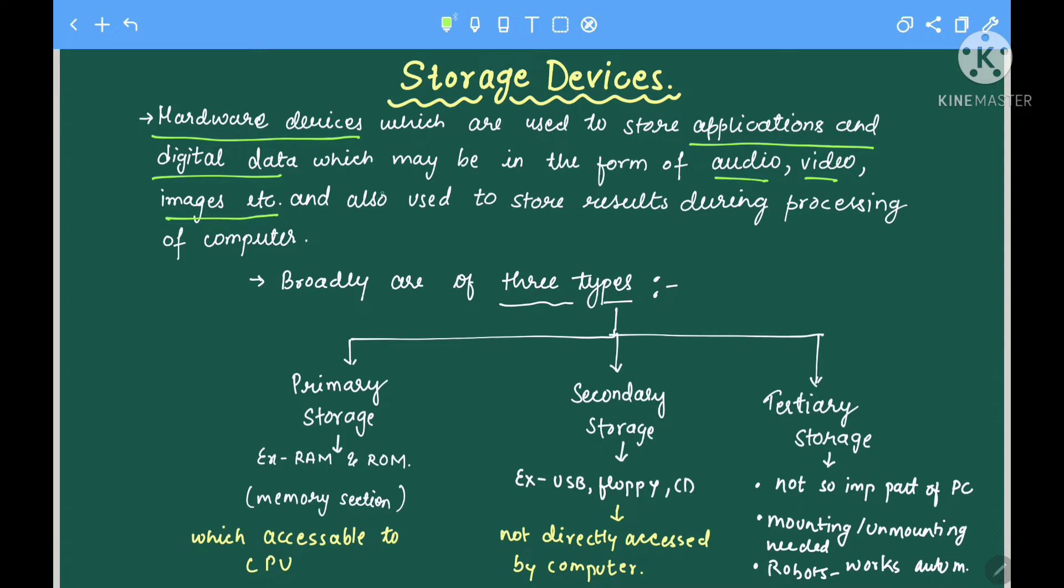There are mainly three types of storage devices in the overall computer system. Primary storage devices we have already studied under the memory section - they are RAM and ROM, which are directly accessible by the CPU.